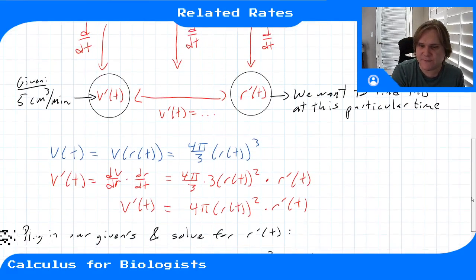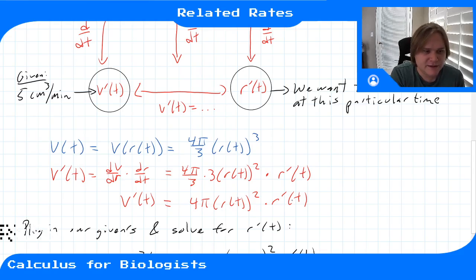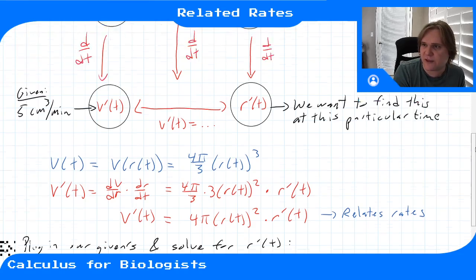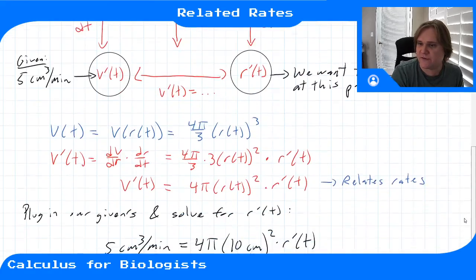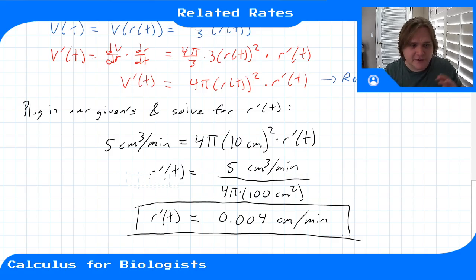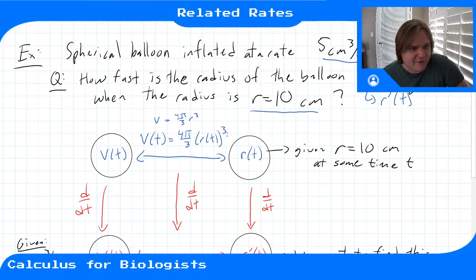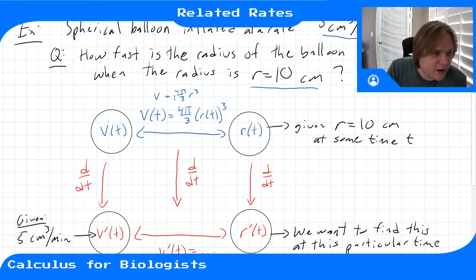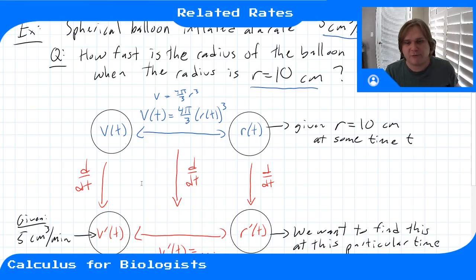That's why it's called related rates: we have an equation V prime = 4π r² · r prime that relates the two rates. We plug in the given information and solve for r prime. In the next video I'll do a more complicated example, but this is the general framework: figure out which variables you have, which rates you want, which rates you already know, find a relationship between the variables from geometry or the problem statement, and take its derivative with respect to time to get a relationship between the rates.